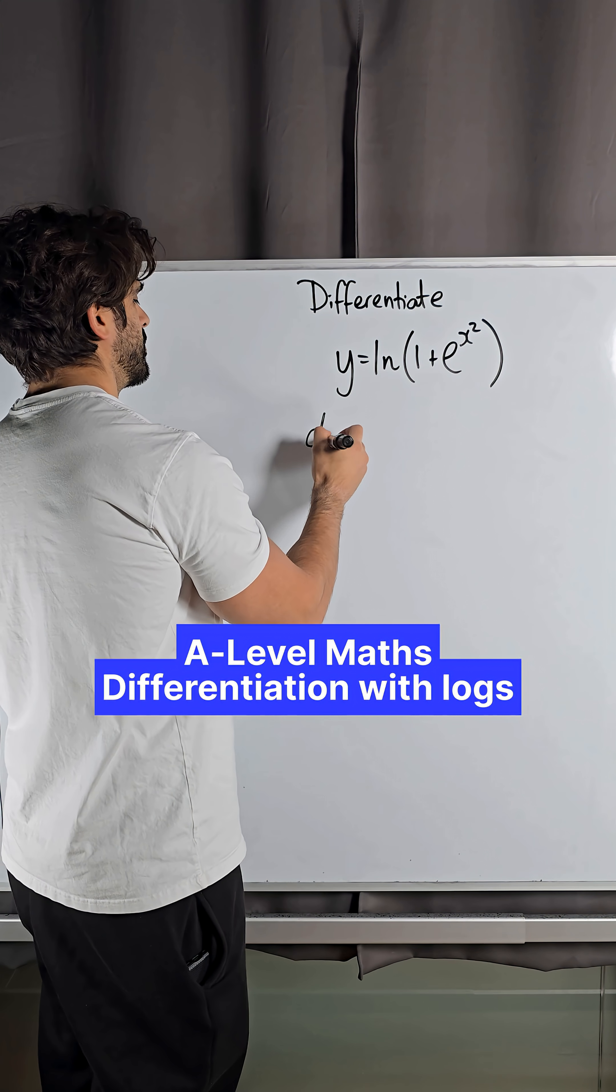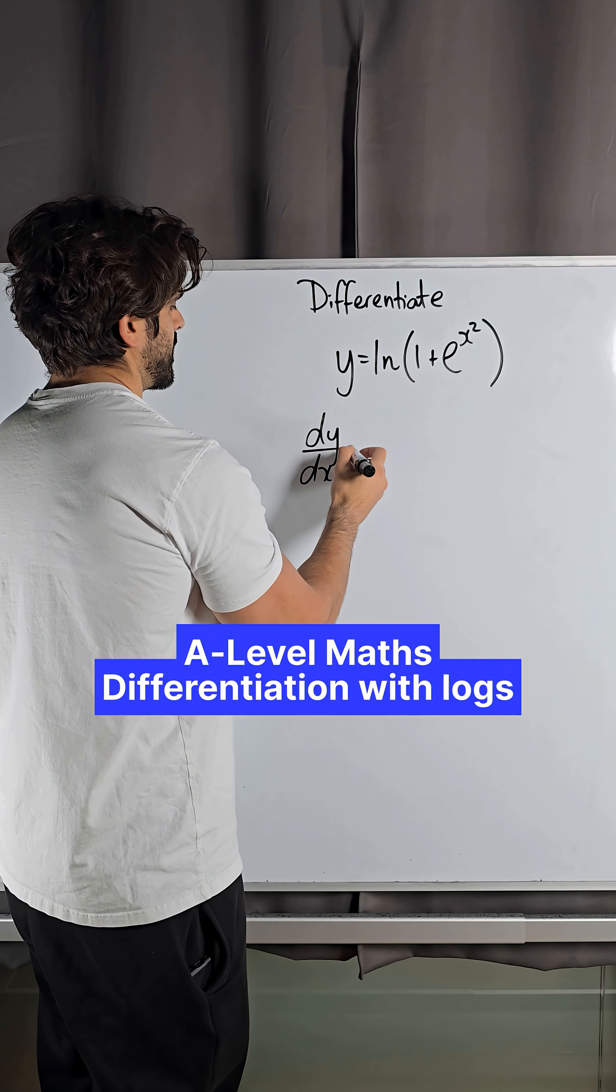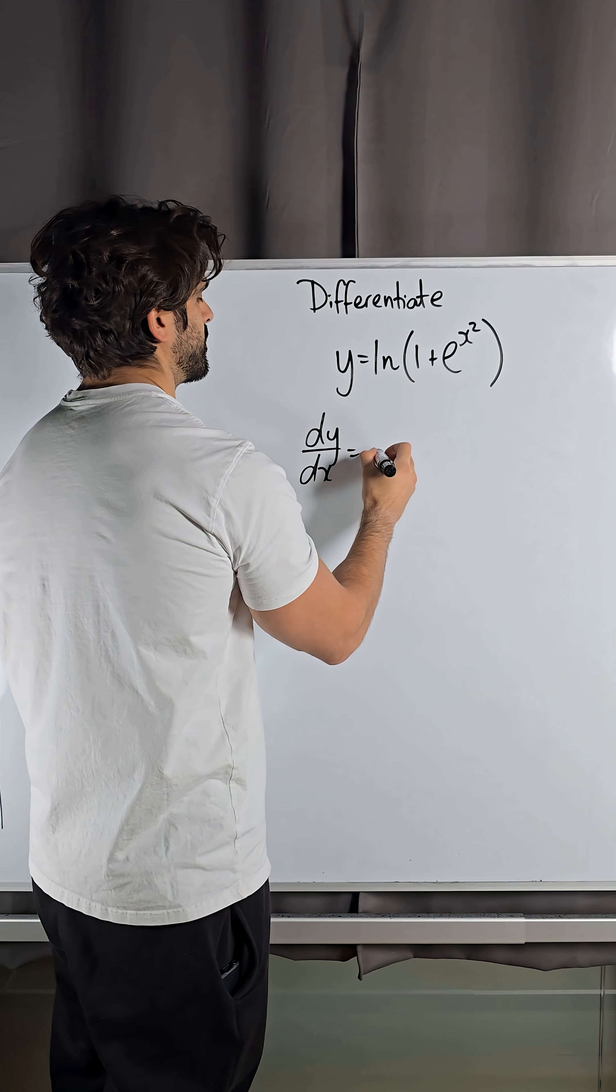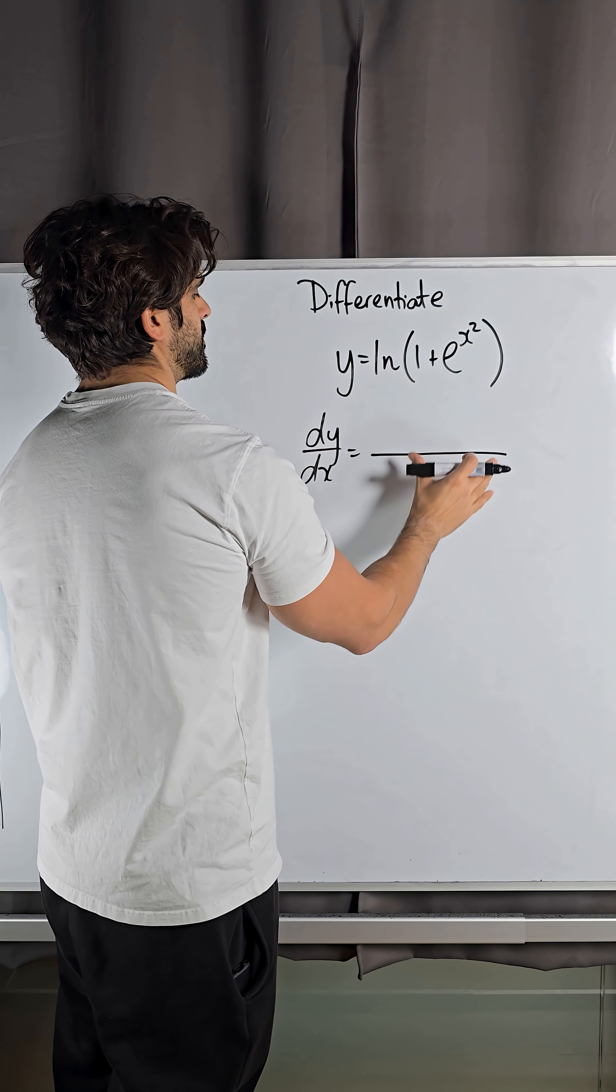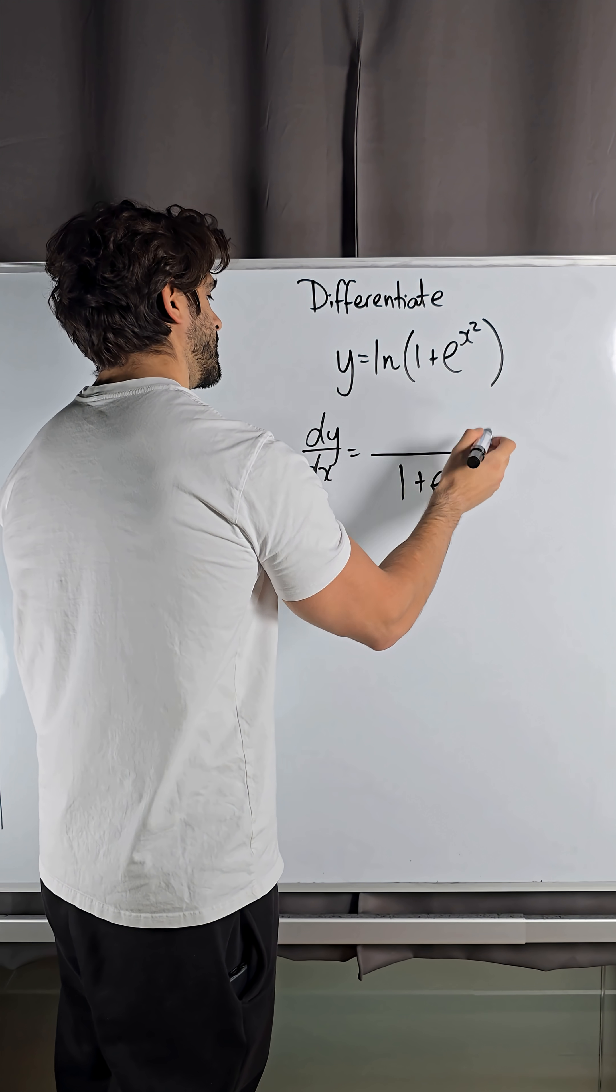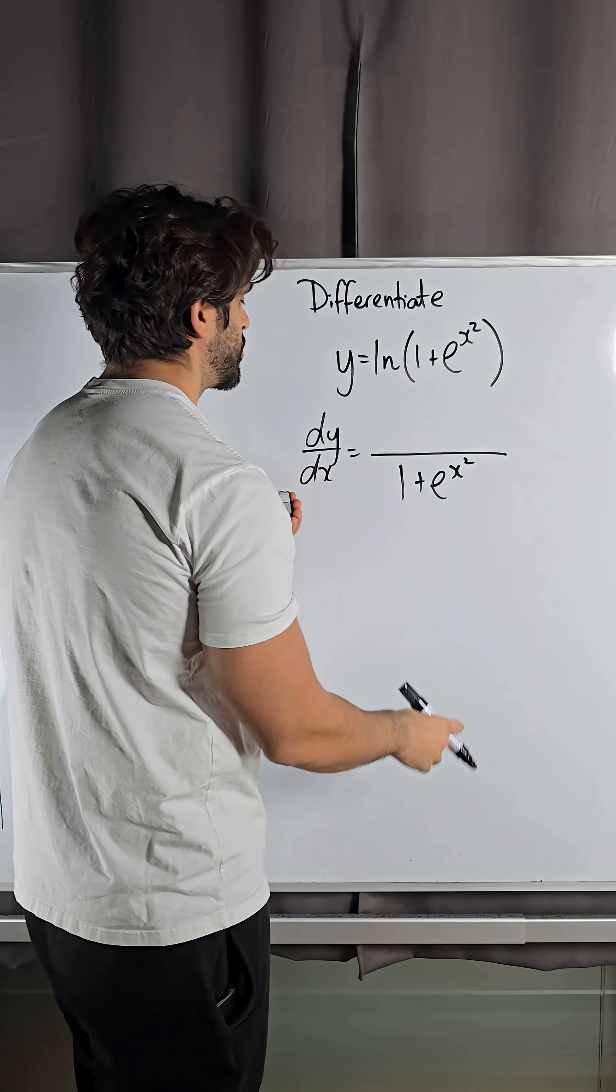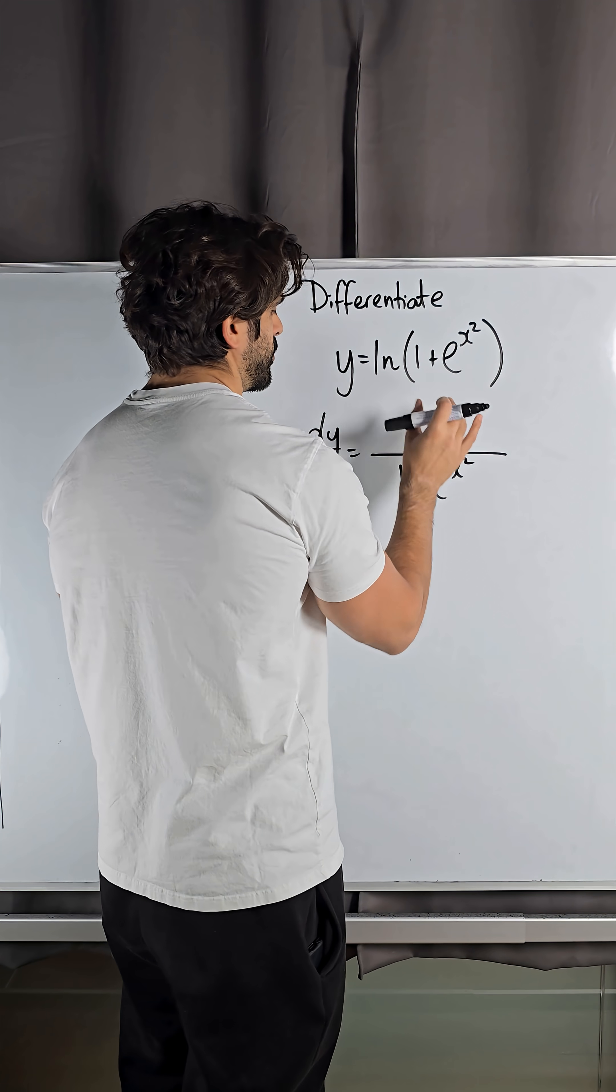Now, to differentiate ln, all it does is reciprocate the argument. So we just do a fraction, the argument goes in the denominator. Then you differentiate the denominator, that gives you the numerator.